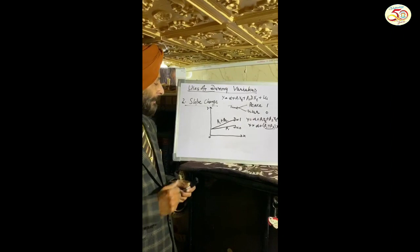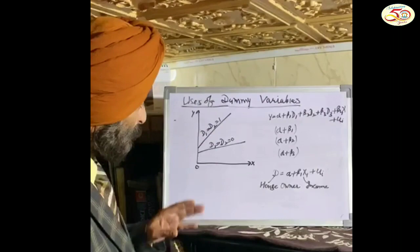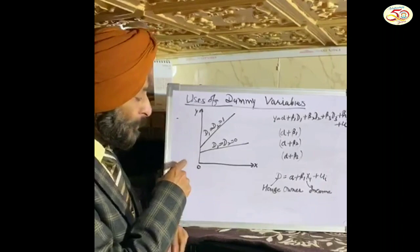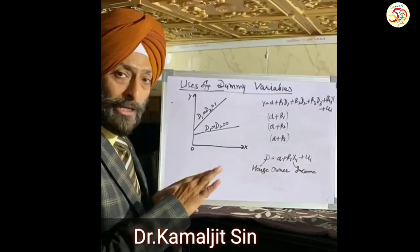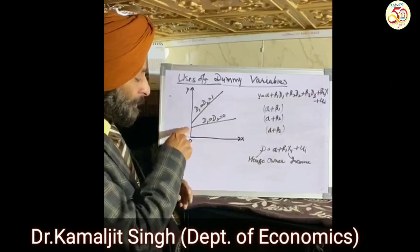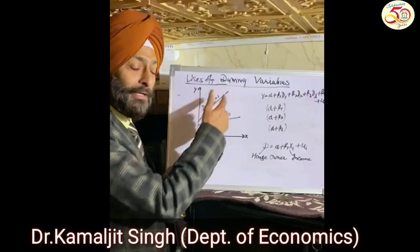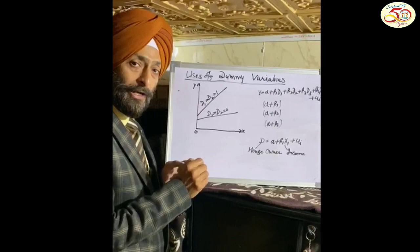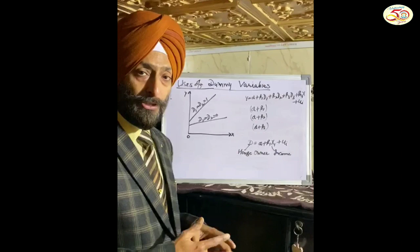Let us take some other uses of dummy variable. A dummy variable can be used to change both intercept as well as slope simultaneously. If we take a model with two dummy variables, D1 and D2, where D1 shows whether American or Indian and D2 shows whether peace time or war time, then assigning value 1 to both D1 and D2 (American, normal period) gives one consumption function, while assigning 0 to both (Indian, abnormal period) gives a different consumption function.